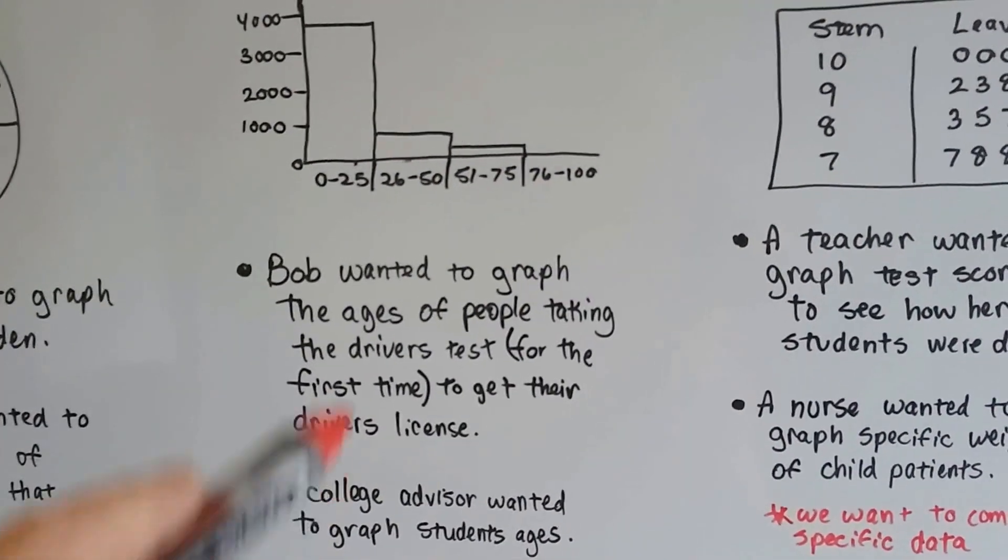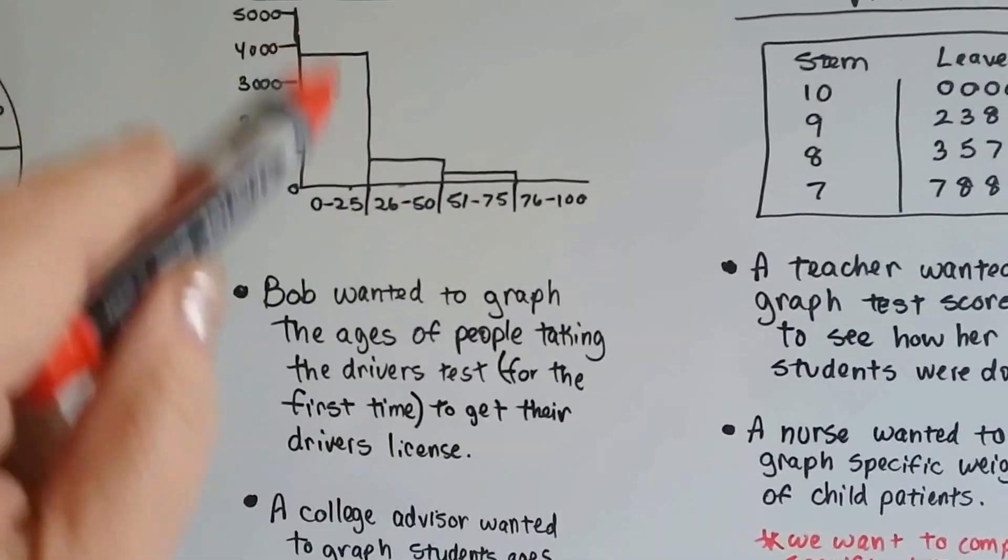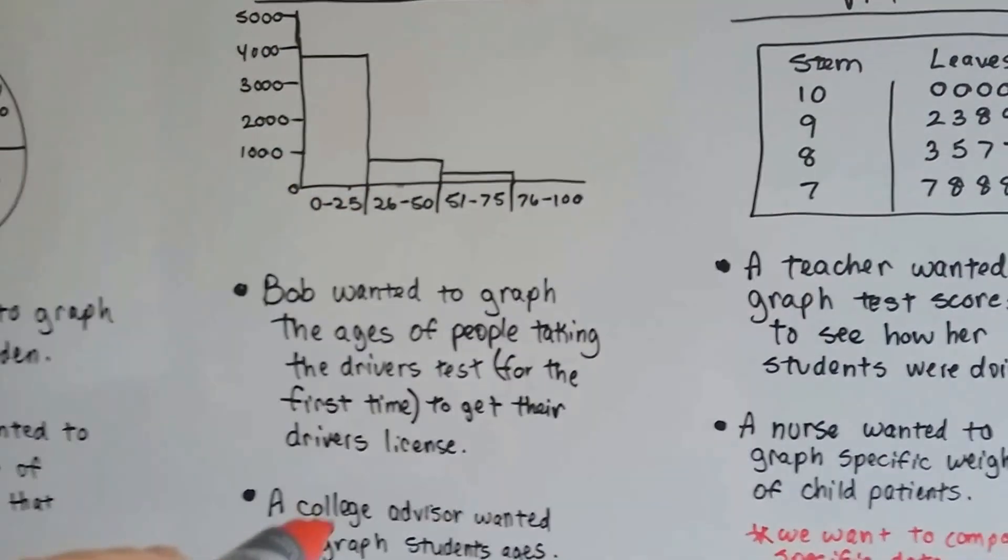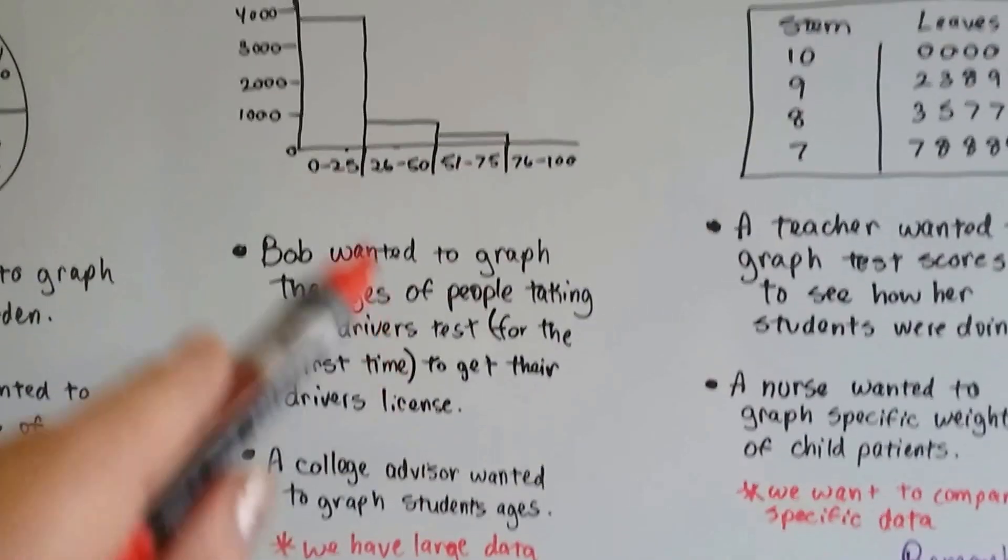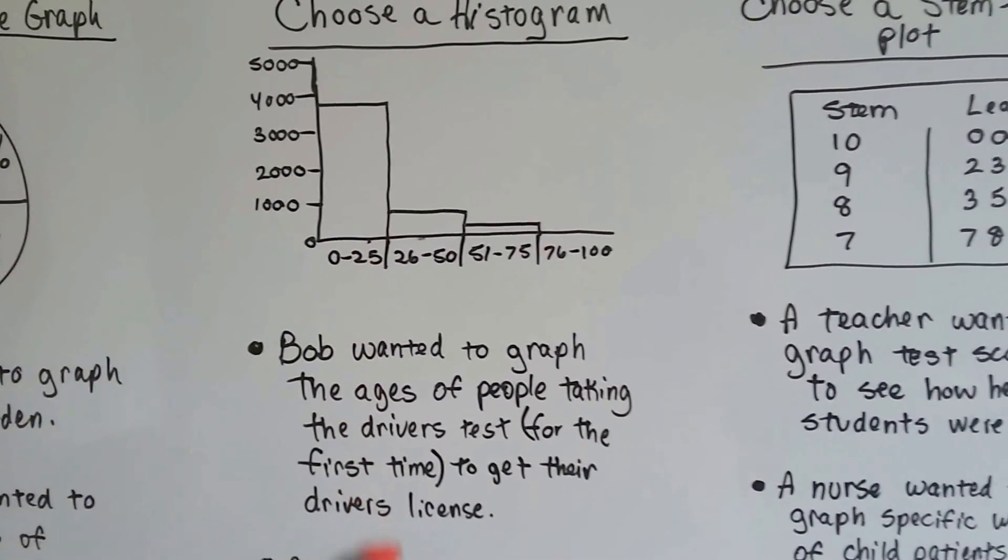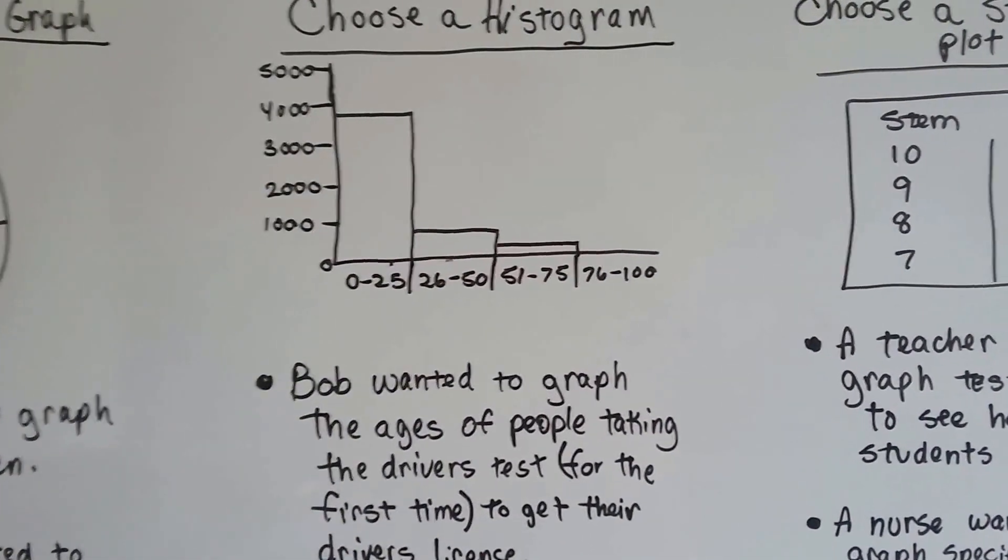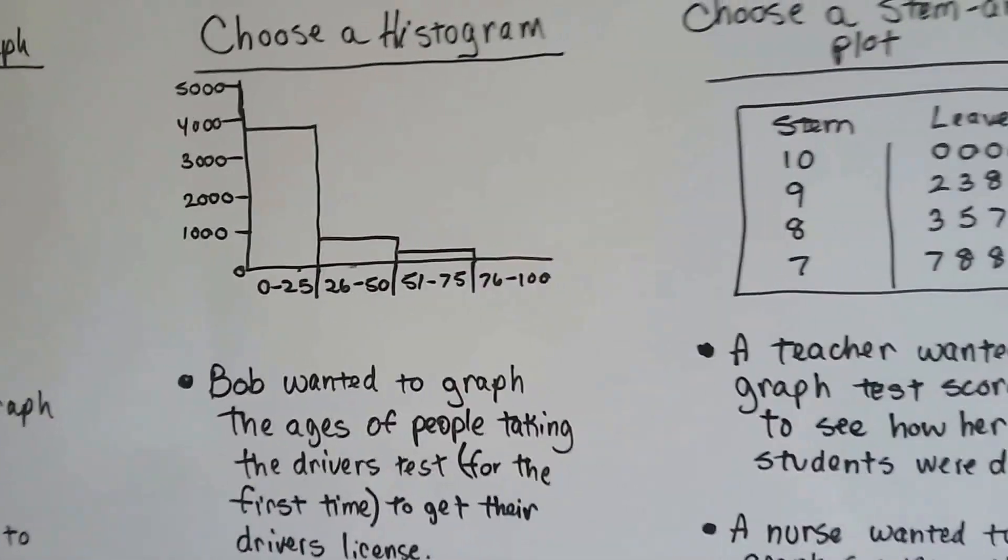Or a college advisor wanted to graph students' ages to see roughly what the ages were of the students at the college. When you have large data and you're grouping hundreds or thousands or many, a histogram is a good way to go.